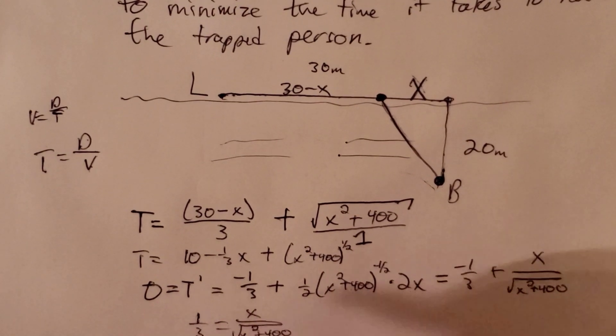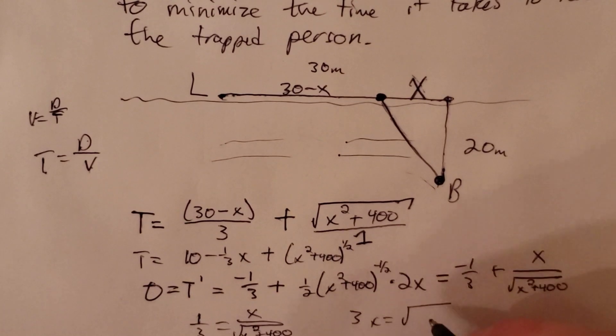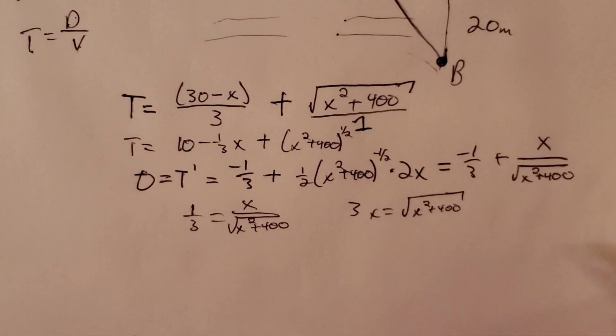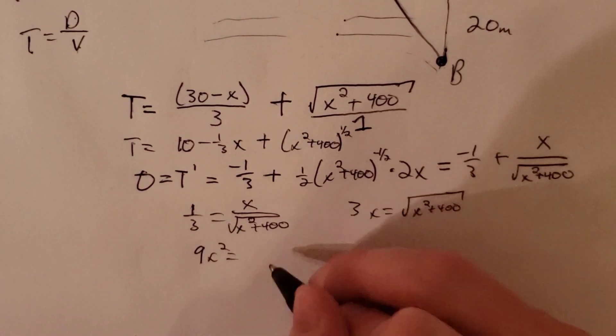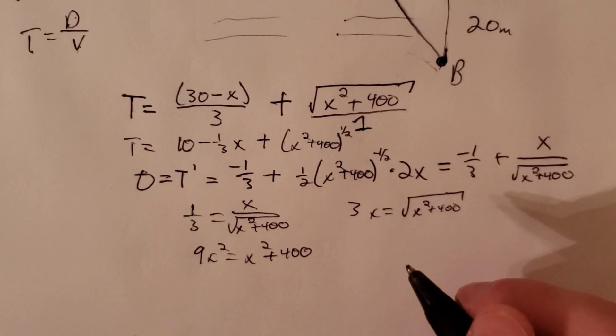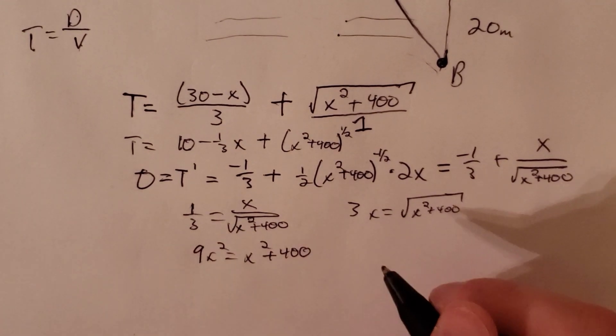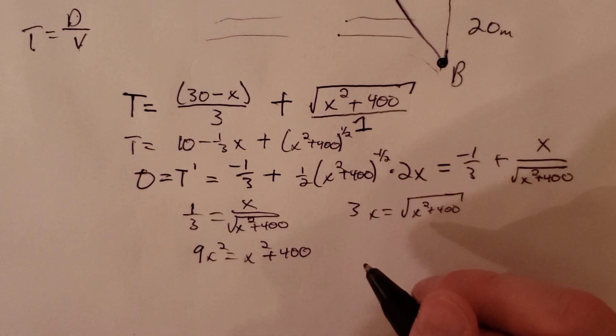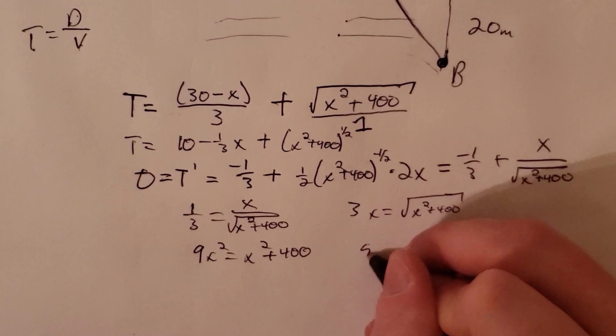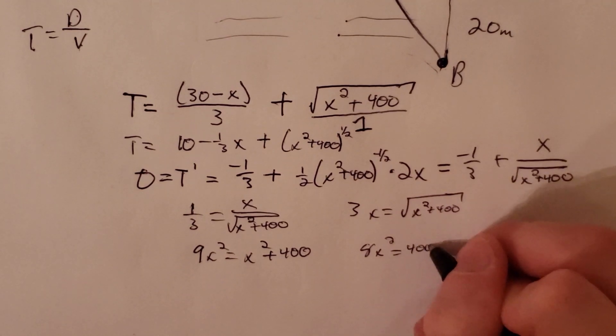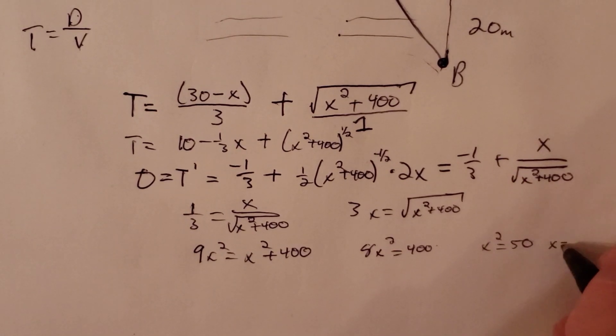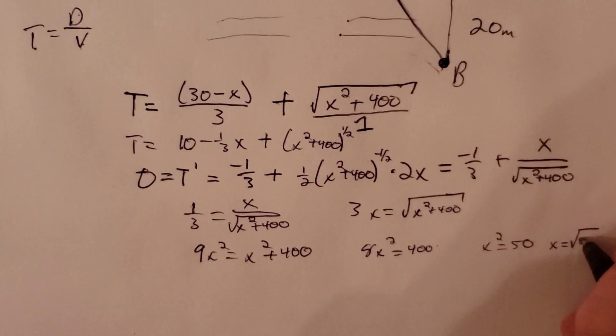When I cross multiply here, we can get 3x is equal to the square root of x squared plus 400. And then we can square both sides. So we get 9x squared is equal to x squared plus 400. From here, we can subtract the x squared over and we get 8x squared is equal to 400. So divide by 8, we get x squared is equal to 50. And so x is equal to the square root of 50.